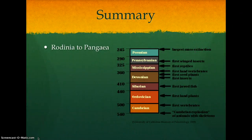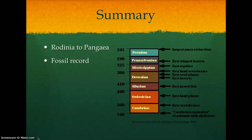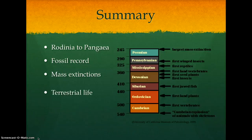Beginning with Rodinia and ending with Pangaea, our planet experienced many land shifts during the Paleozoic era. Organisms with shells and exoskeletons evolved during the Cambrian explosion, providing us with a fossil record of the time. The Ordovician and Permian periods experienced the first and second largest mass extinctions in Earth's history. Terrestrial life developed in the Silurian period, leading to the arrival of forests and terrestrial vertebrates in the Devonian period.